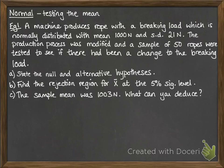So let's have an example here. We've got a machine that produces rope with a breaking load that's normally distributed with mean of 1000 newtons and standard deviation of 21 newtons. The production process is modified and a sample of 50 ropes were tested to see if there's been any change to the breaking load. So we're going to state the null and alternative hypothesis, find the rejection region for the mean at a 5% significance level, and then the sample mean was found to be 1003 newtons. We're going to say what conclusion we can draw from that.